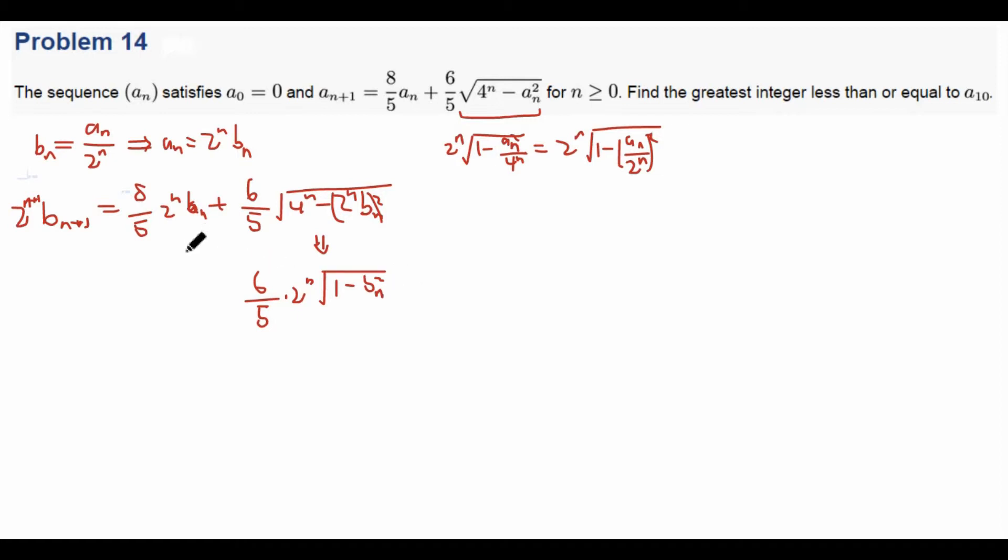Okay, now we see that we have a factor of 2^n, conveniently, 2^{n+1}. So we can divide this from both sides to get the equation B_{n+1}. Okay, we're halfway there now. All we need to do is find B_10 and then we can find A_10 and then we are done.